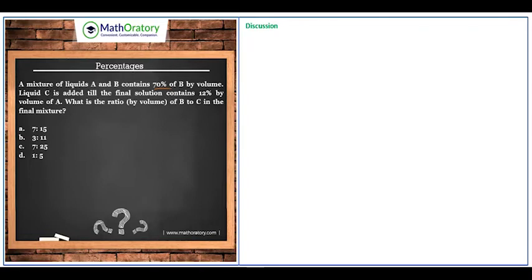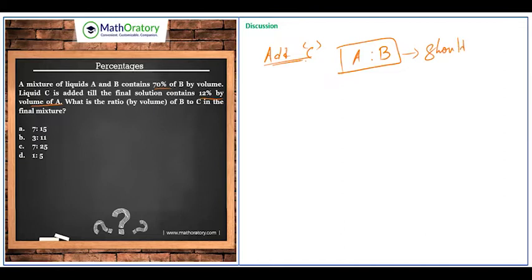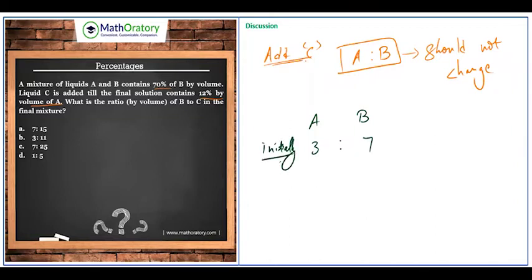When we add liquid C, the final solution must contain 12 percent of A. The key insight is: when we add C, we do not change the volume of A or B, so the ratio of A to B should remain constant. Initially, B is 70 percent and A is 30 percent, giving an initial ratio of A to B as 3 to 7. This ratio must also hold in the final mixture.